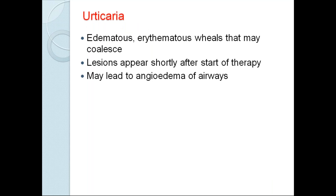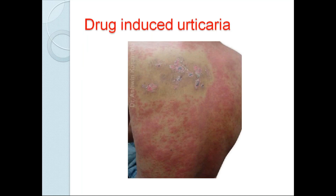Coming to the urticarial type of lesions: certain drugs cause edematous, erythematous wheals that may coalesce. Lesions appear shortly after starting therapy — the patient will tell you that only after taking certain drugs did they start developing this. Sometimes they may even develop angioedema — swelling of the lips and eyes. Rarely, edema of the airways can also be seen.